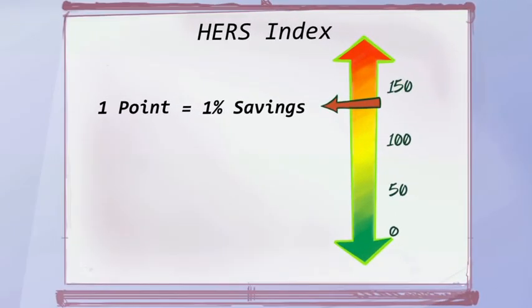For example, a home that has a HERS Index of 65 is 35% more efficient than a home with a HERS Index of 100.